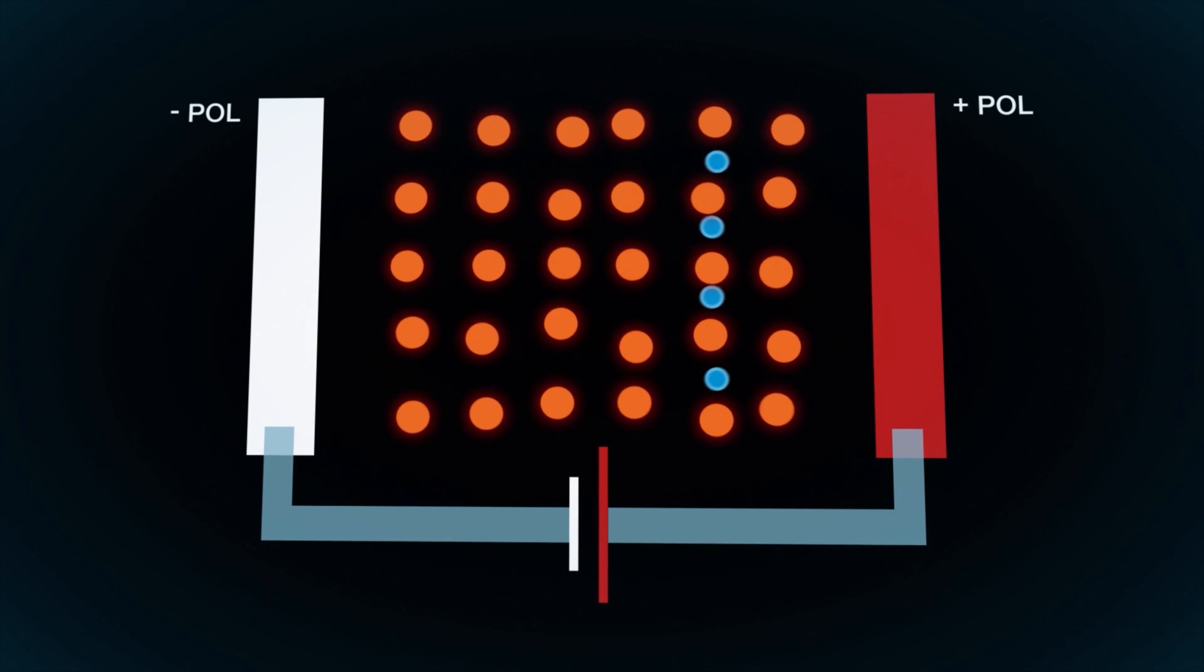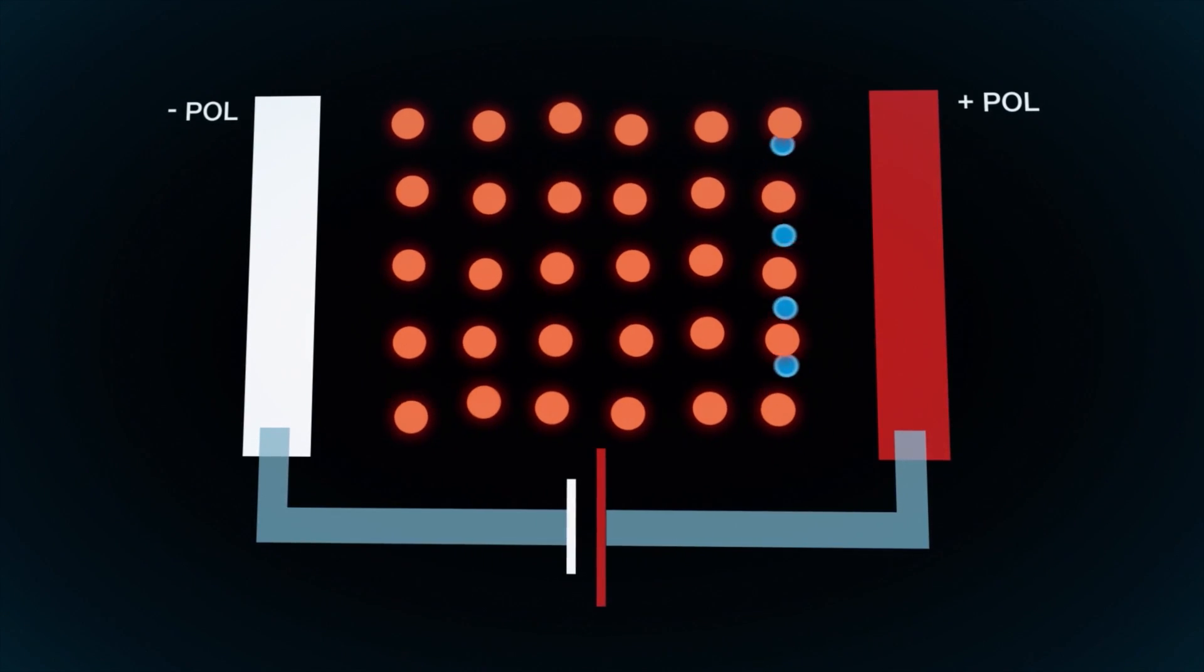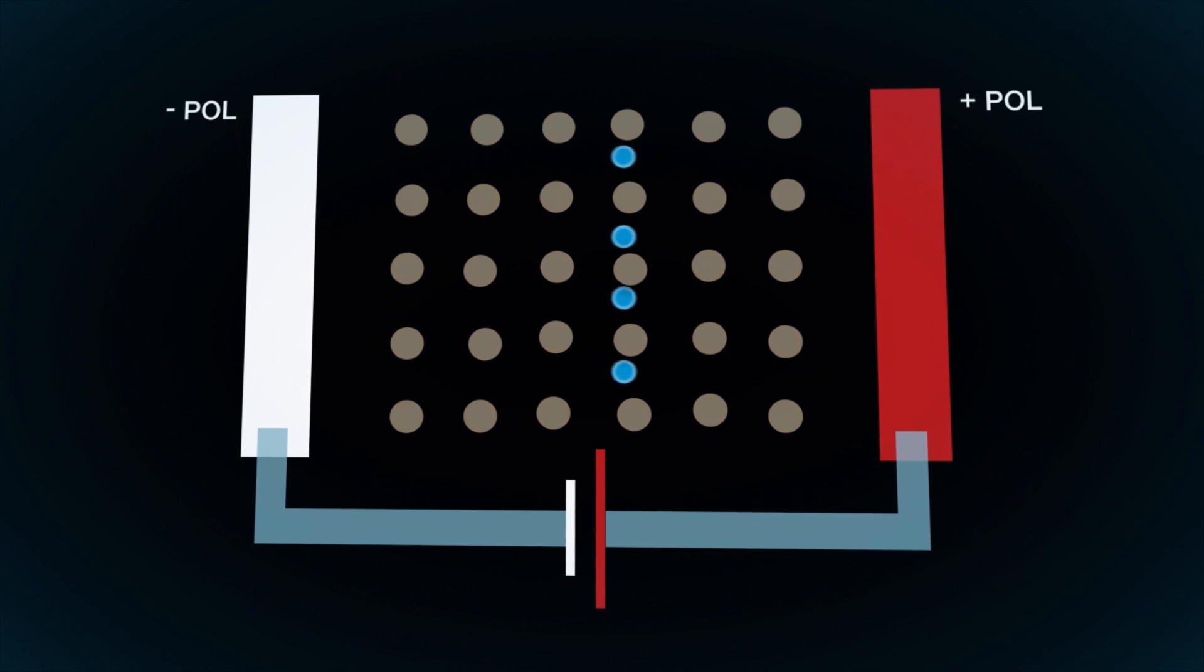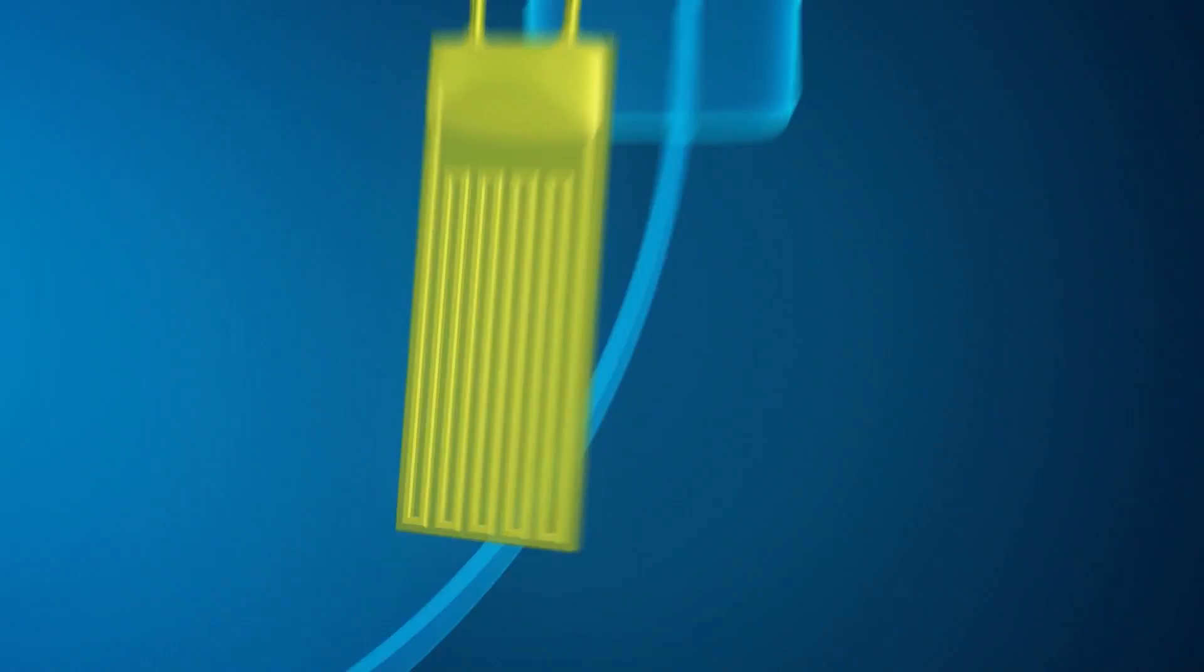A PT100 sensor has a resistance of 100 ohm exactly at 0 degrees Celsius. This value increases if the temperature rises and decreases if the temperature drops.